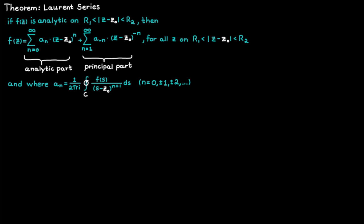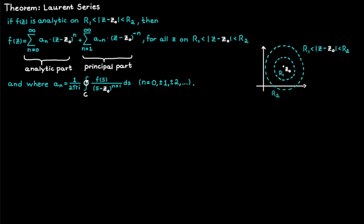You don't really have to remember the coefficient formula since we never really use it. Instead, we manipulate known geometric series to determine the coefficients, just like we did in the case with Taylor series. An annular domain looks something like this — it's all the c values which lie between two circles. The inner circle is determined by radius r1, while the outer circle is determined by radius r2, making it look pretty much like a donut.